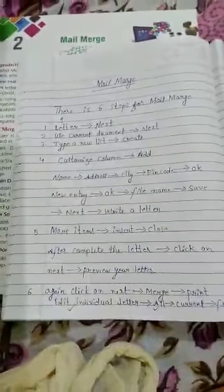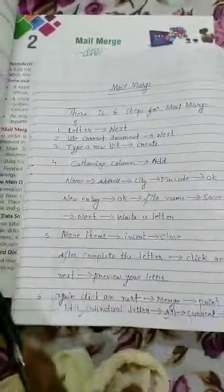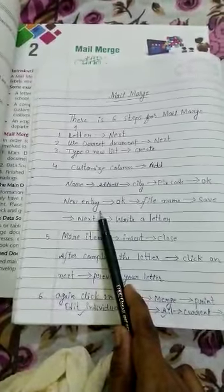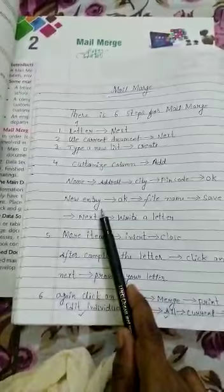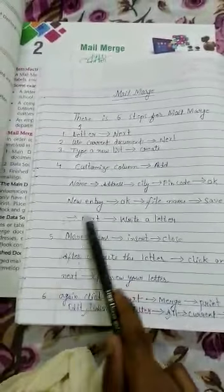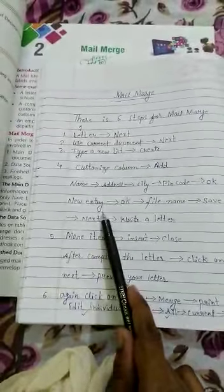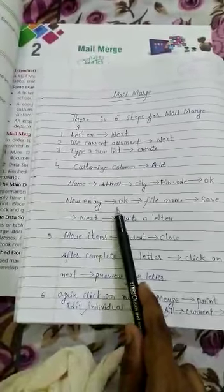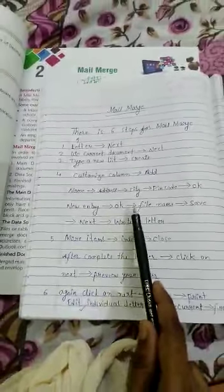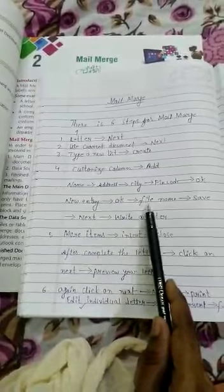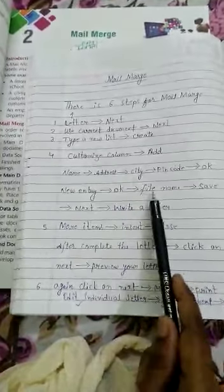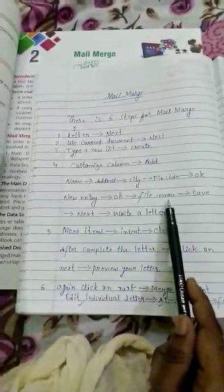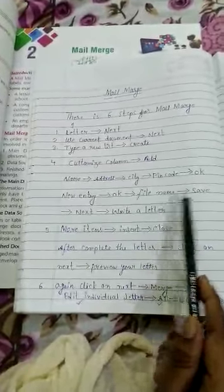Then you will click on OK. After that there is a new entry option. New entry means you want to add more than one record, so you will enter one more record as a new entry. Then you will click on OK. After that it will ask for a file name — for which name you want to save your file. You will give any name and save your file.